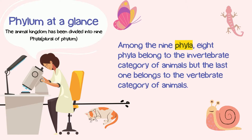This phyla is in the Animal Kingdom, and it is called the invertebrate category. This is the most important part of the phyla. We can look at the first part covering developmental nature and body structure. Today we will discuss the first eight phyla.